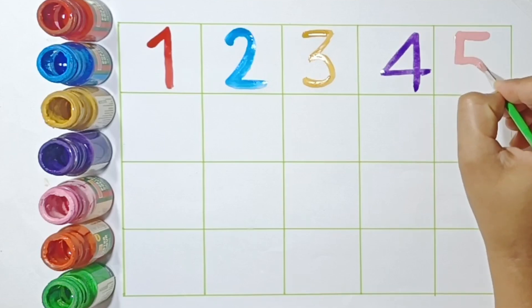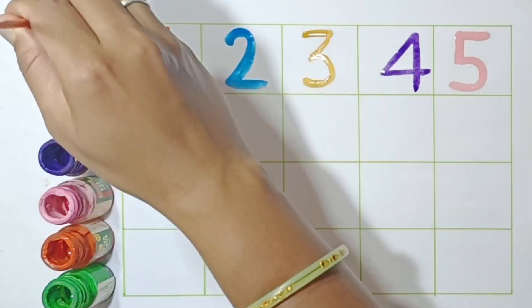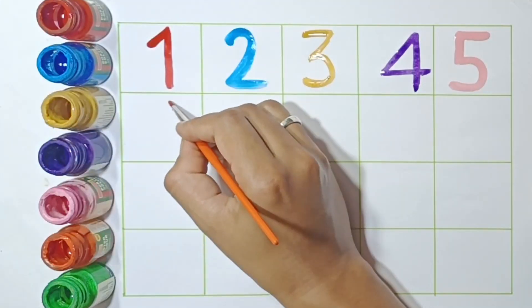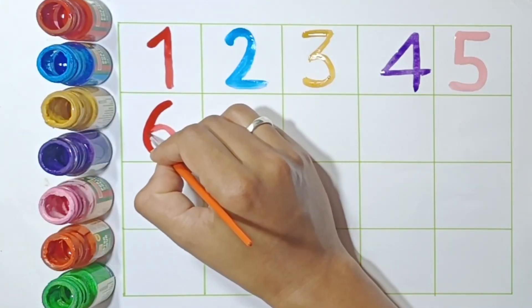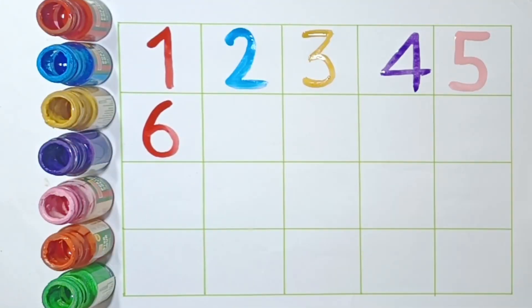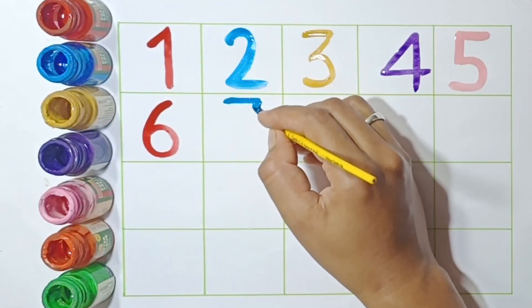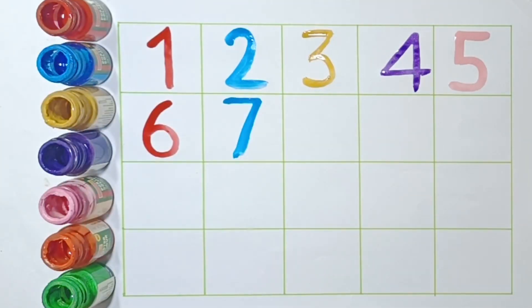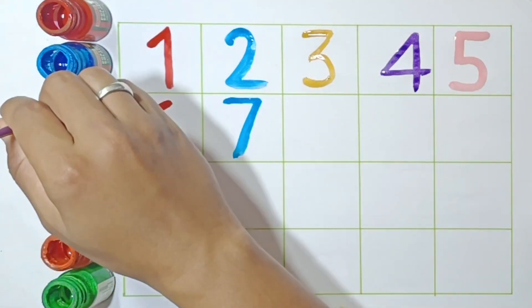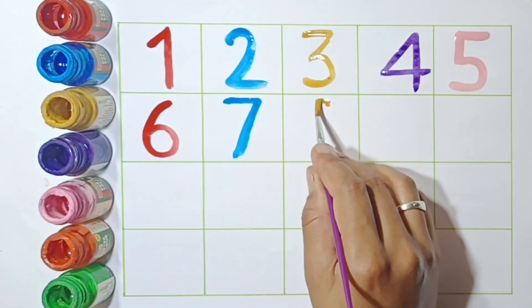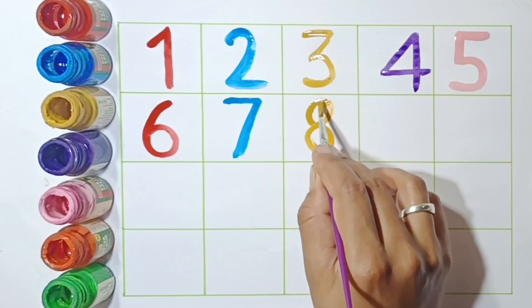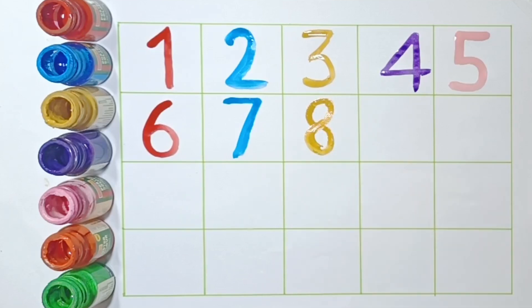5: F-I-V-E. 6: S-I-X. 7: S-E-V-E-N. 8: E-I-G-H-T.